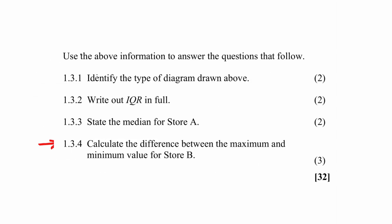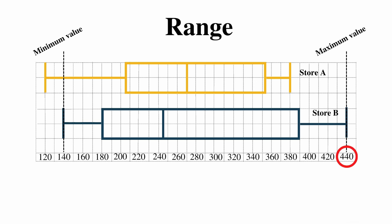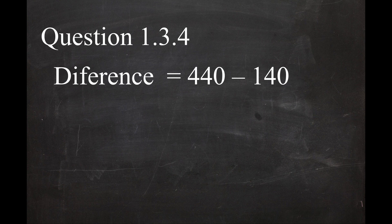In question 1.3.4, you are instructed to calculate the difference between the maximum and minimum value for store B. The difference between the maximum and minimum value in a data set is called the range. The range for store B is 440 minus 140, which gives you a value of 300.